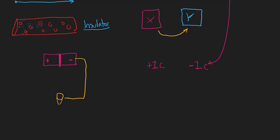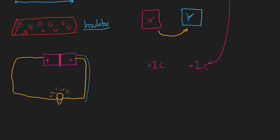Instead, we can make the electrons power a light bulb or anything, really. As the electrons move down the circuit, they'll power the light bulb and then move to the positive terminal. This is the way that we can conceptualize electricity. There are a couple of concepts we should be aware of regarding the movement of electrons.